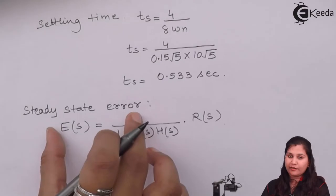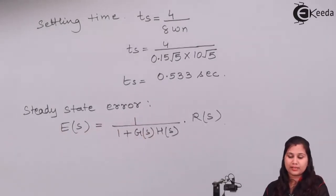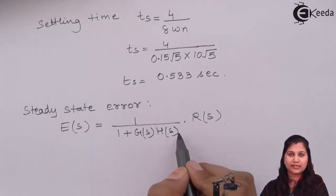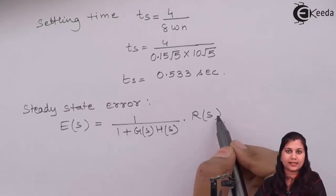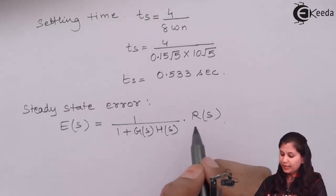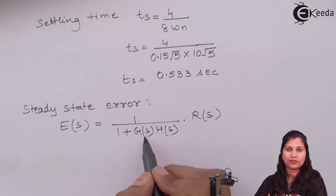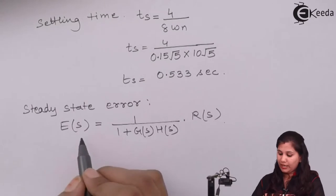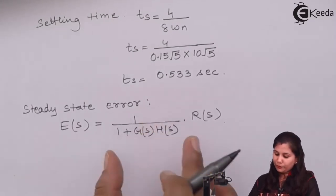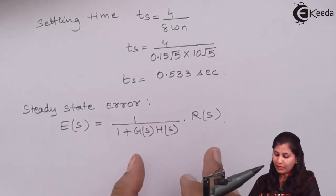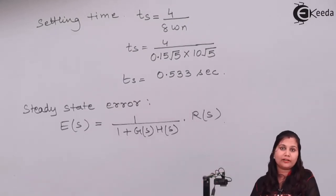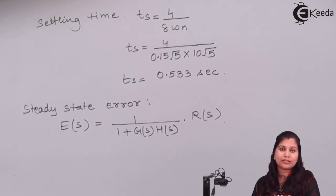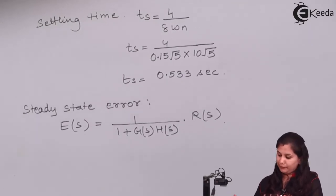Now we calculate the steady state error. For a second order control system, the steady state error is given by the limit of s times E(s) as s tends to zero. E(s) equals R(s) divided by (1 plus G(s)H(s)). We have to calculate the steady state error for a ramp input of 0.5 radians per second.